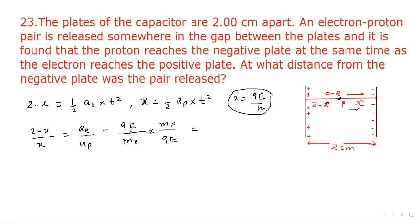So here qE will cancel out. Mass of proton 1.67 times 10 to the power of minus 27 divided by mass of electron 9.1 times 10 to the power of minus 31.